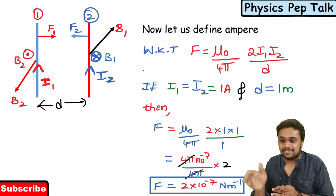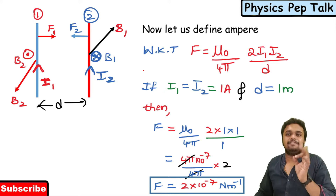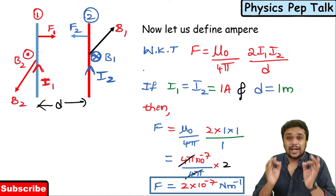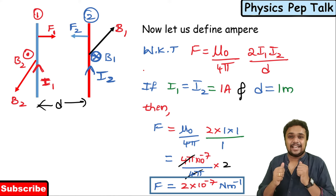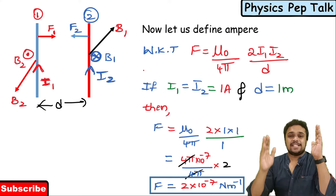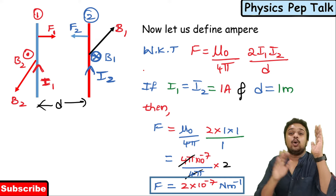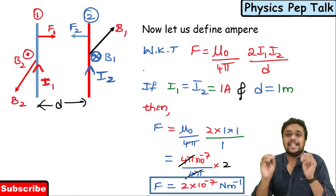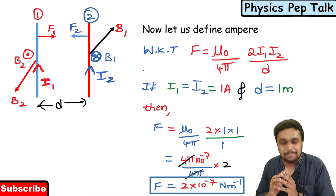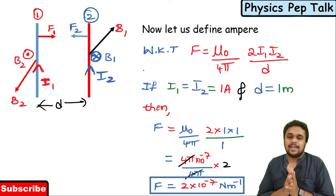To define 1 Ampere: 1 Ampere is defined as that steady current flowing in two infinitely long conductors of negligible cross-section, separated by a distance of 1 metre in free space, such that they experience a force of 2 × 10⁻⁷ Newton per metre.